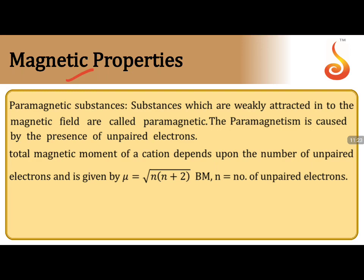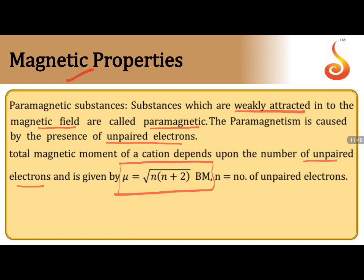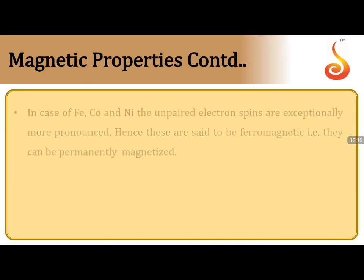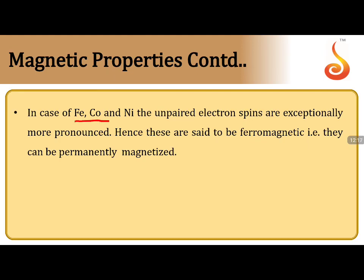Magnetic properties are classified into three types: paramagnetic, diamagnetic, and ferromagnetic. Paramagnetic substances are weakly attracted in a magnetic field due to the presence of unpaired electrons. The total magnetic moment depends on the number of unpaired electrons, calculated by the formula: μ = √(n(n+2)) Bohr magnetons, where n is the number of unpaired electrons. This formula appears repeatedly in examinations.